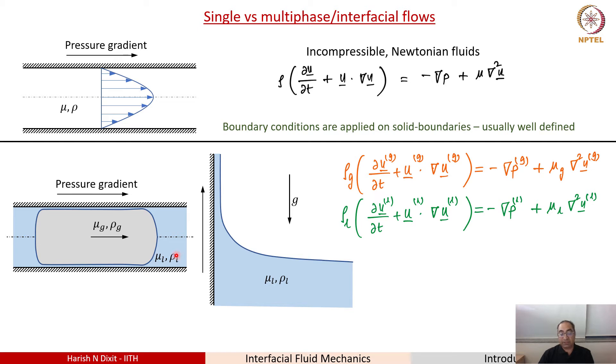Now you could have a system where both the gas and the liquid have to be simultaneously solved. These are called two-phase flows or multi-phase flows or interfacial flows. You could also have a system where the gas is just a passive medium and offering a constant pressure. In such cases, we refer to them as free surface flows.